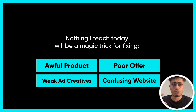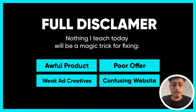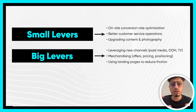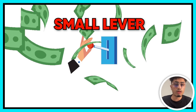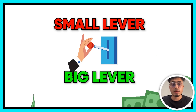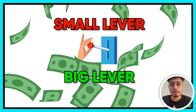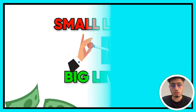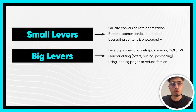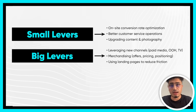Full disclaimer: nothing I teach you today will be the magic trick to fixing a poor offer, an awful product, weak ad creatives, or a confusing website. Before we get into it, you need to understand there are different levers you can pull in your business — small levers and big levers — and each provides different amounts of ROI and incremental revenue. Small levers mean less revenue; big levers mean more revenue.